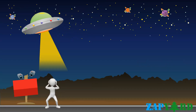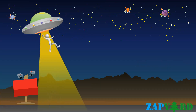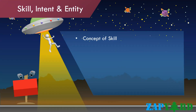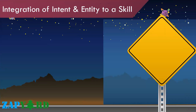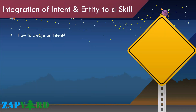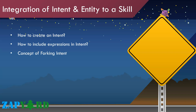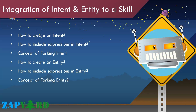Skill, Intent, and Entity are the keys for AI. The trainer will cover the concepts and details of all three keywords in depth. Once we learn those concepts, we will learn how to create an intent. We will cover expressions and forking in detail, which are needed in intent. We will also learn how to create an entity and include expressions and forking in entity.